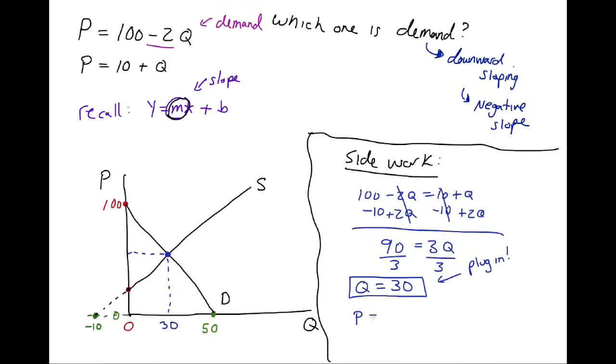P equals 10 plus Q, which is 30, which equals 40.